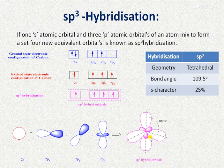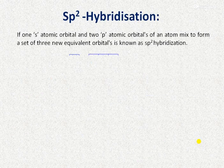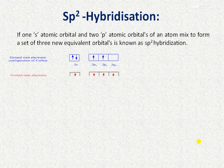Four new sp3 hybrid orbitals are formed with tetrahedral geometry, a bond angle of 109.5 degrees, and 25% s-character. This sp3 hybrid carbon atom forms four covalent bonds (four sigma bonds) with other atoms or orbitals.